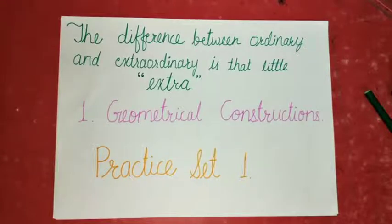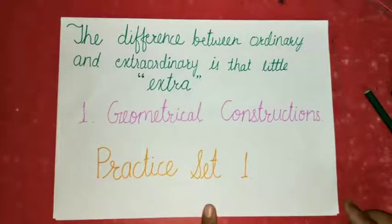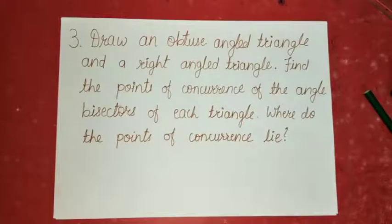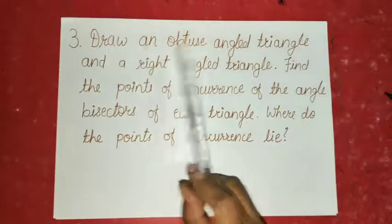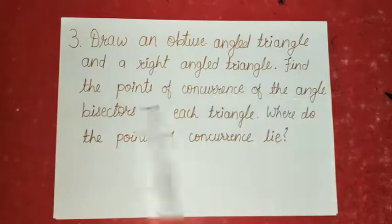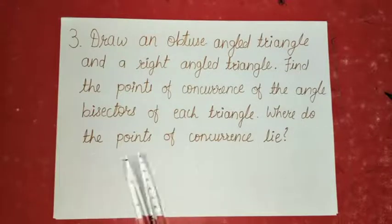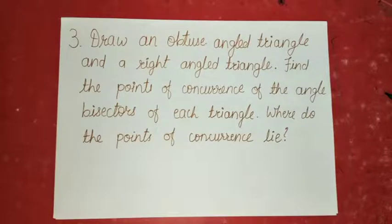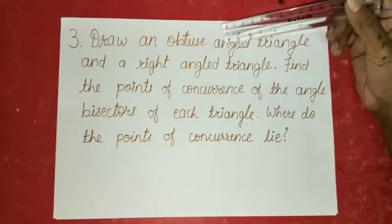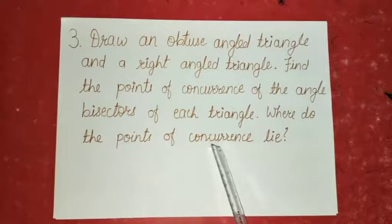Let us continue with the first chapter, Geometrical Construction. We are learning Practice Set 1. We are done with question number 1 and question number 2 in our previous videos. Now let us begin with question number 3. Get ready with your textbook, notebook, and geometry box. Question number 3: draw an obtuse angle triangle and a right angle triangle, find the points of concurrence of the angle bisectors of each triangle, and observe where the points of concurrence lie. In this construction we have to do two constructions — one of an obtuse angle triangle and the other of a right angle triangle — and in both triangles we have to draw angle bisectors and find the location of the point of concurrence.